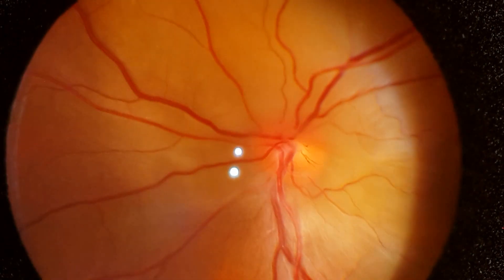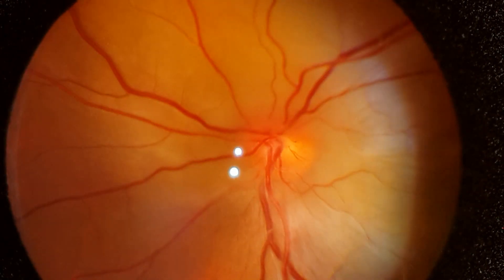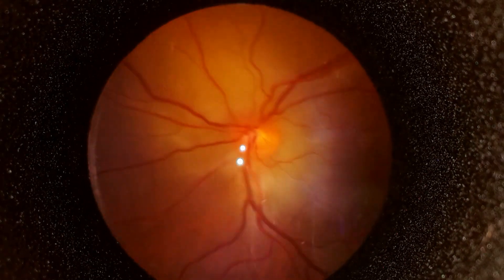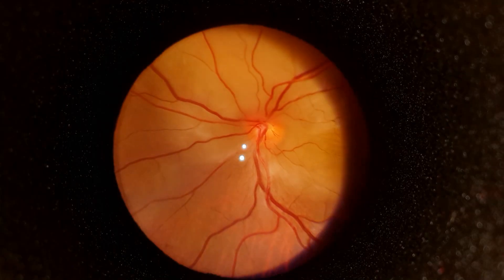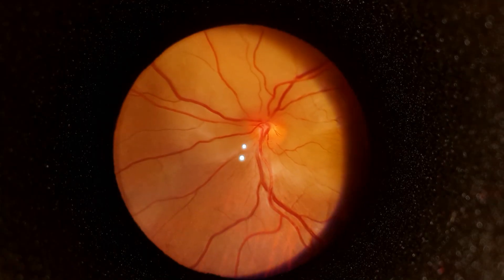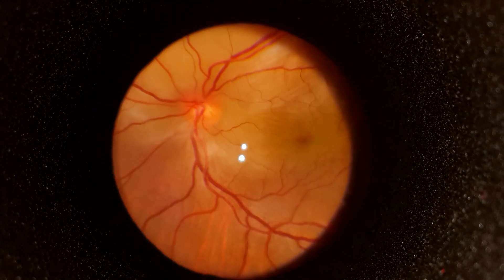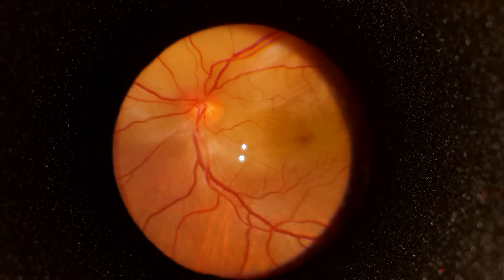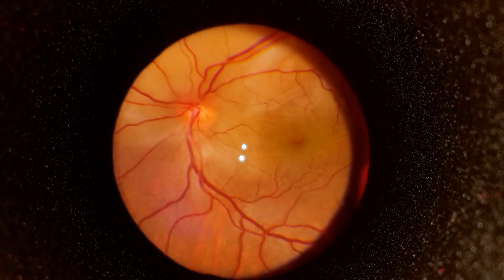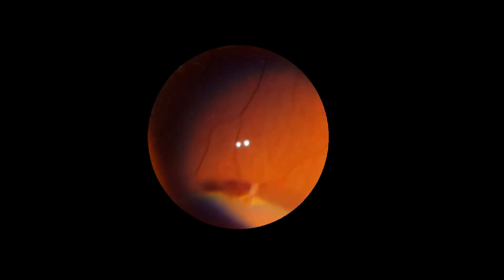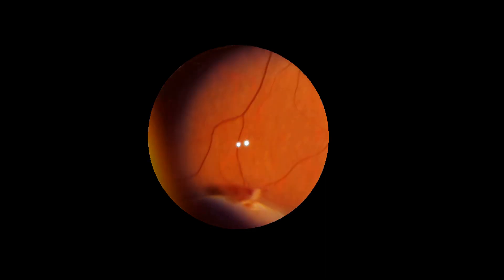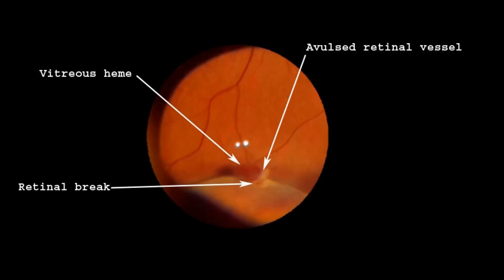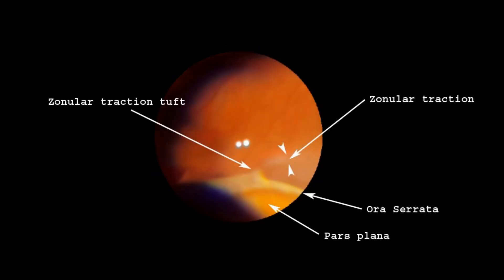As with anterior segment, video documentation is also possible with smartphone fundus imaging. Here is a patient with choroidal metastasis, just superior to the disc. Note the pulsations over the disc and the exudative retinal detachment. This is a patient with avulsed retinal vessel and zonular traction tuft. Peripheral video documentation of such high quality is possible with this cost-effective technique.